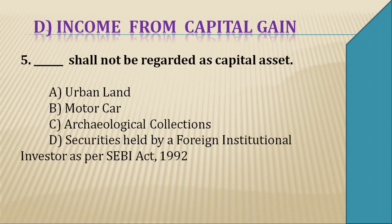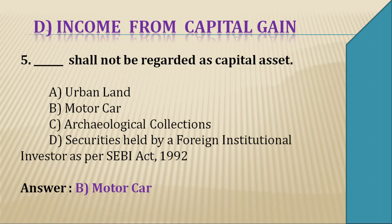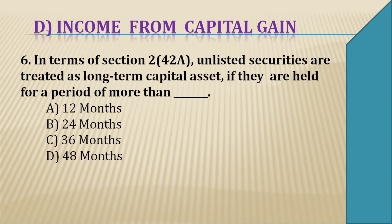Question 5: What shall not be regarded as a capital asset? The options include urban land, stock-in-trade, personal collections, and securities held by a foreign institutional investor as per SEBI Act. The right answer is B — stock-in-trade.